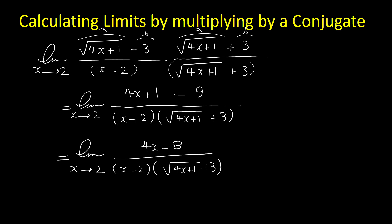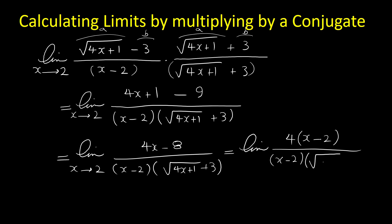In the expression 4x minus 8 you can easily factor out a 4. If you do so, we have 4 times bracket x minus 2, over x minus 2 times radical 4x plus 1 plus 3. Now you can see that we can cancel the common factor between the top and the bottom, which is x minus 2.